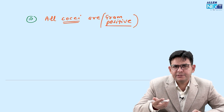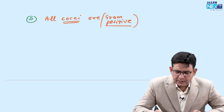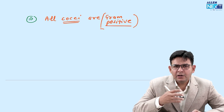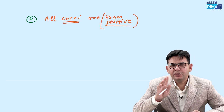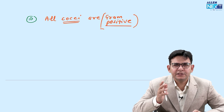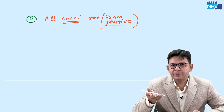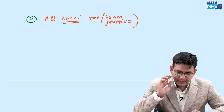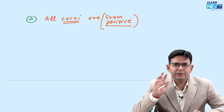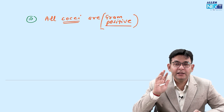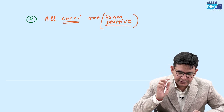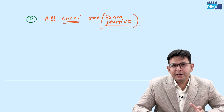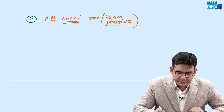When you start in bacteriology or general microbiology, you hear two words: Staphylococcus and Streptococcus. For your information, there are 80 others which are gram-positive cocci, but you don't need to remember all of them.